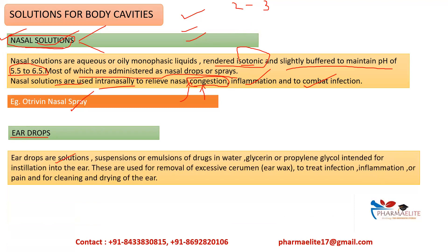Eardrops can be either solutions, suspensions, or emulsions of drugs in water, glycerine, or propylene glycol, intended for instillation into the ear. These are used for removal of excessive cerumen (ear wax), for treating infection and inflammation, for pain, and for cleaning and drying of the ear. Since cerumen is mostly insoluble in water, oily vehicles are mostly used. Glycerine or propylene glycol is used so that the medicament remains at the site for a longer duration.